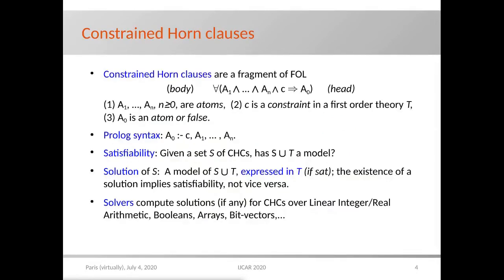Constraint horn clauses are a class of first order formulas consisting of universally quantified implications. The premise, also called the body of the clause, is a conjunction of atoms and a constraint in a given first order theory T. And the conclusion, also called the head of the clause, is either an atom or false. I will use Prolog syntax, writing implications from right to left and omitting the quantifier. The satisfiability of a set S of constraint horn clauses is defined as the existence of a model for S union the constraint theory T.